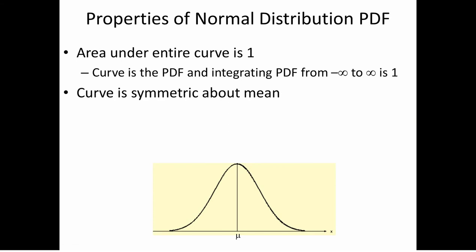The second property is that the curve is symmetric about the mean, and that plays a very vital role when working with a normal distribution. Symmetric means that if I took a knife and cut along the line x equals mu, I could take those two halves, superimpose them, and they'd be exactly the same — they'd fit right into each other.